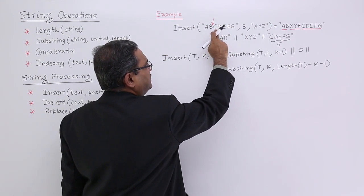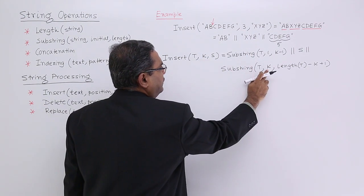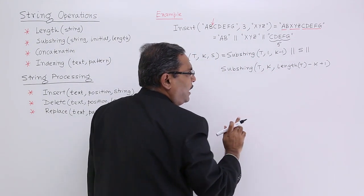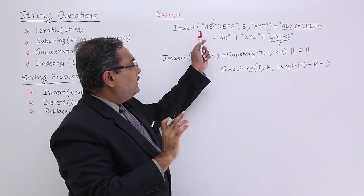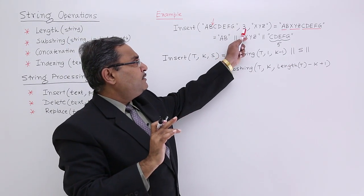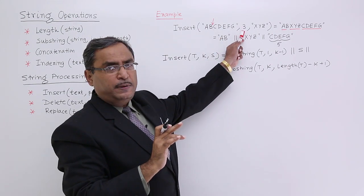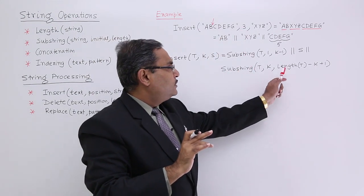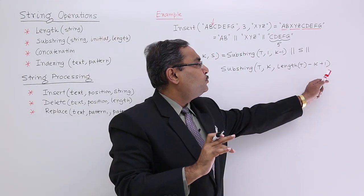How many characters? I require 5 characters. What is the length here? 7. And what is the value of this? 3. So 7 minus 3 plus 1 means what? 5. So length of T minus K plus 1. This is the genetic form.